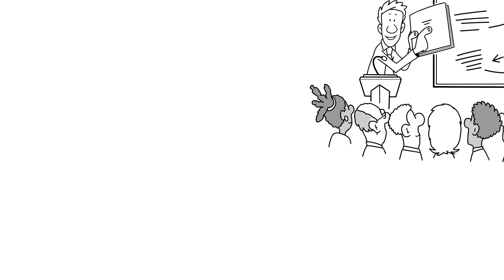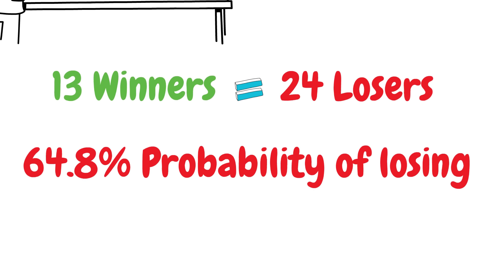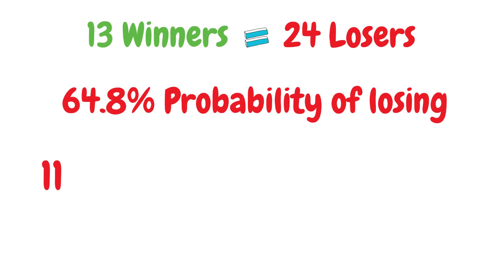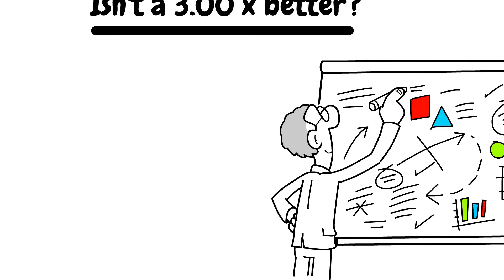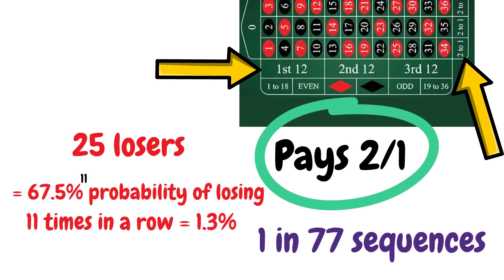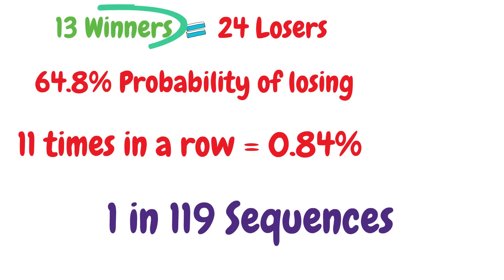However, if we move to this improved Fibonacci system, betting on 13 numbers and a probability of losing each spin at just 64.8%, our chances of losing 11 bets in a row has now reduced to just 0.84%. In other words, there is a 1 in 77 chance of hitting an adverse sequence and being stopped by the table limit using the original system, and just a 1 in 119 chance of the same situation happening to us by betting on our 13 numbers.